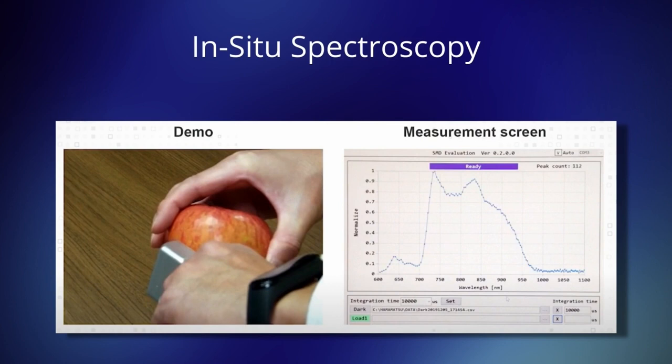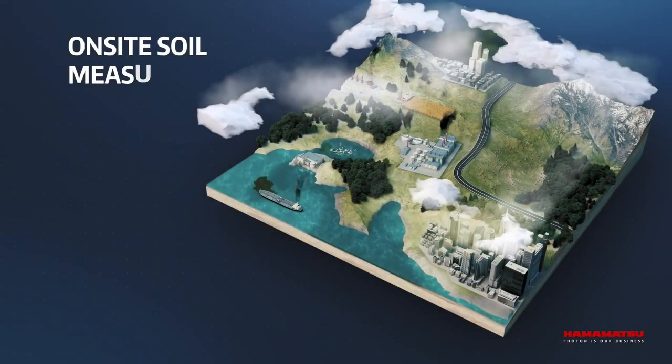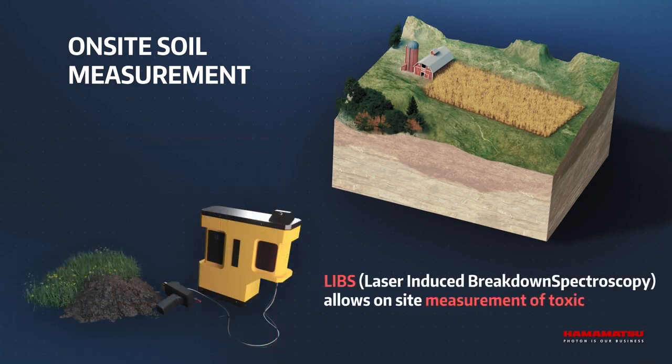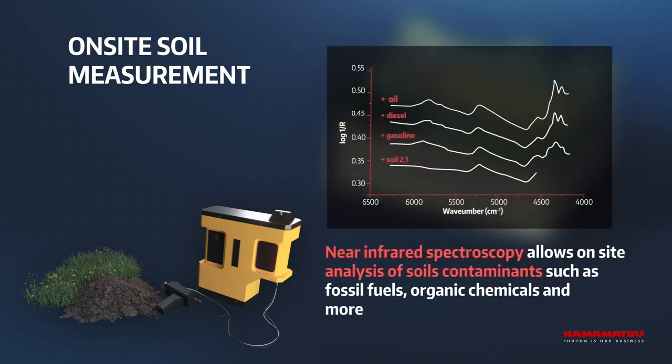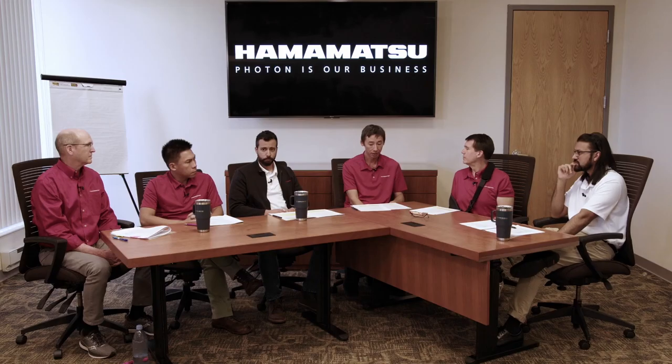The traditional method has always been to send a sample to the lab — these methods are still done today. We probably all see it in our daily lives: send the sample to the lab and wait a couple of weeks to get results back. But with the trend of reducing the size of spectroscopy solutions and spectrometers, we're really moving towards being able to send instrumentation out into the field and monitor things more in real time. There's also the food industry inspection of the actual product, where we see improvements in optical technology helping as well.